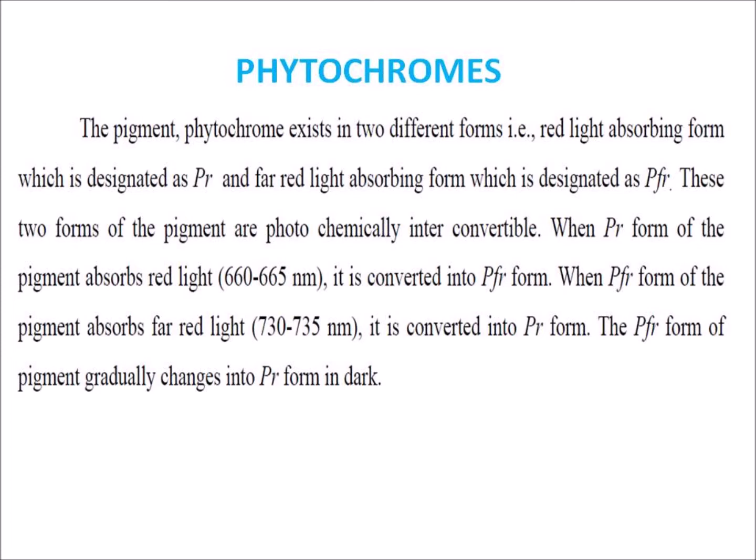The pigment phytochrome exists in two different forms: the red light absorbing form, designated as Pr, and the far red light absorbing form, designated as Pfr. These two forms of the pigment are photochemically interconvertible. When the Pr form absorbs red light, it is converted into Pfr. When the Pfr form absorbs far red light, it is converted back into Pr.